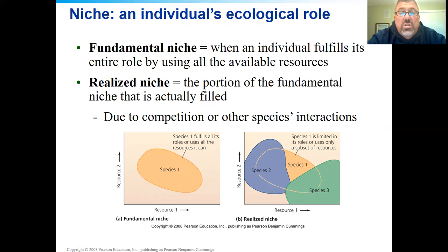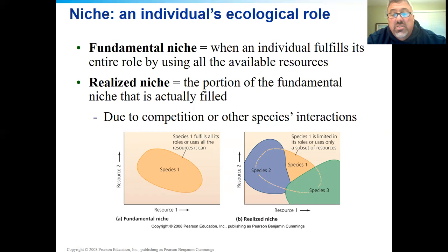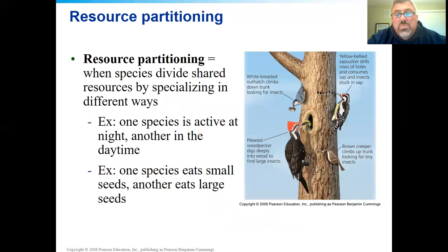A fundamental niche is basically what an individual fills in an ecosystem as a functioning individual. The problem is you can't just do it by yourself — multiple species are involved and they're utilizing resources as well. That gives us the realized niche, which is the true role being played with other species interacting. The realized niche is the realistic one; the fundamental niche is as if the species were by itself — what would it do? Resource partitioning is pretty cool.